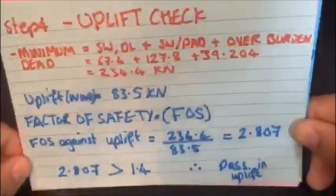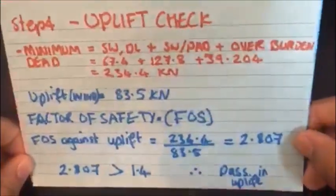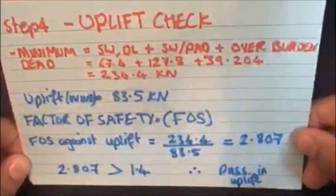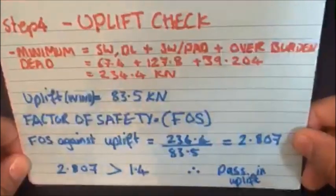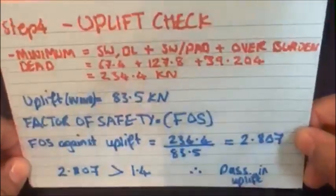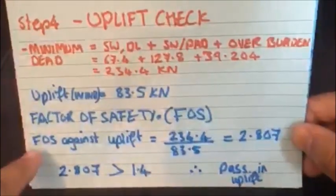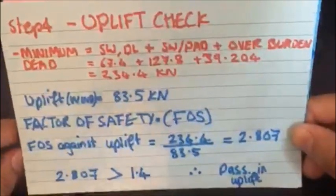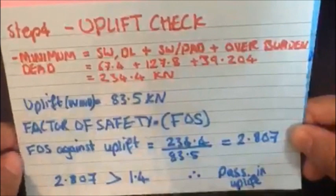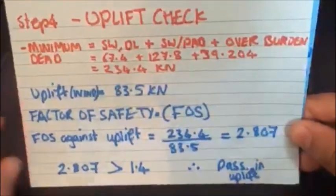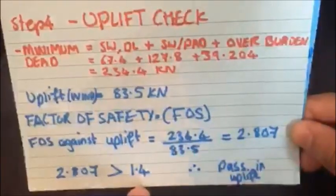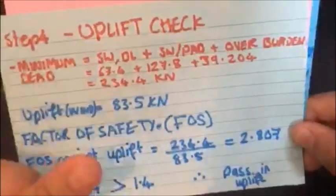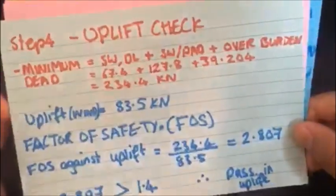And with the uplift check, you check it against the factor of safety, which I've abbreviated to FOS. The factor of safety for an uplift check according to British standards is 1.4. So if your ratio that you get when you check against uplift is greater than 1.4, your pad design passes for the uplift check. So factor of safety against the uplift: 234.4 divided by 83.5 gives you 2.807. As you can see clearly, this exceeds 1.4, therefore it passes in the uplift. So now we know that it passes in the bearing pressure and it passes in the uplift. Now we only have sliding check, which brings us on to step 5.